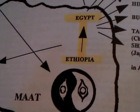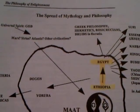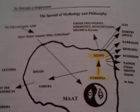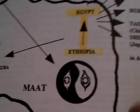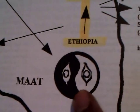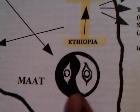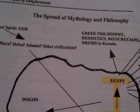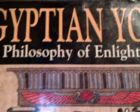This chart from Egyptian Yoga is one of the best explanations that shows the spread of mythology and philosophy from ancient times to modern times through different cultures. You probably know this symbol as a yin and yang symbol, but it's also a very ancient African sigil or symbol. This particular book is named Egyptian Yoga.